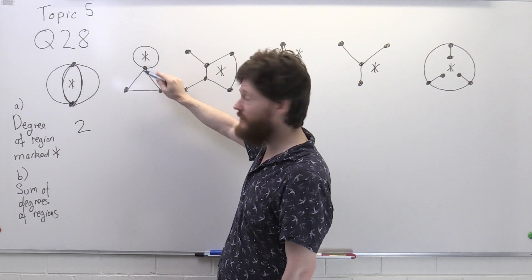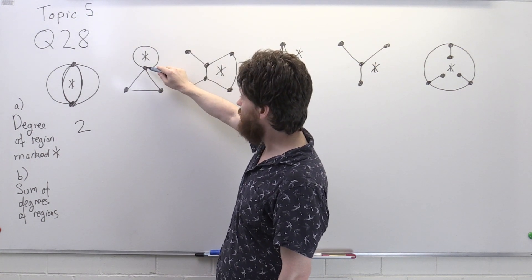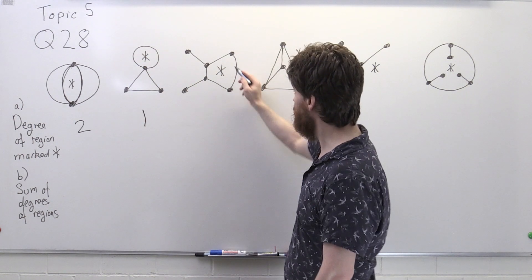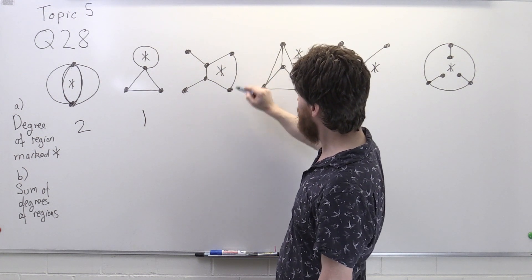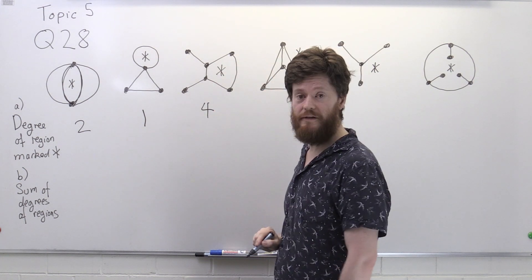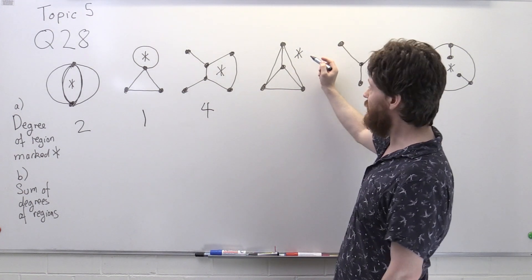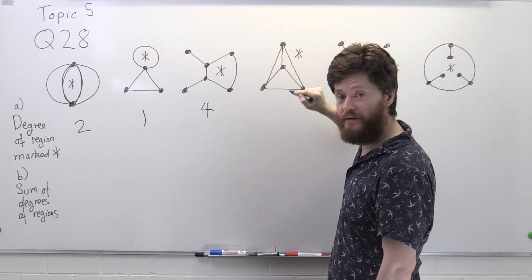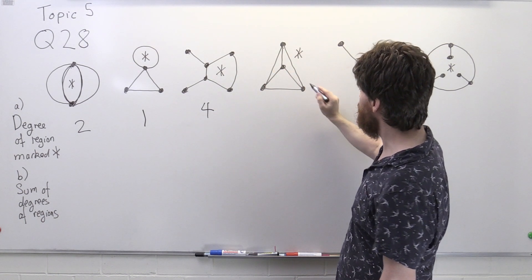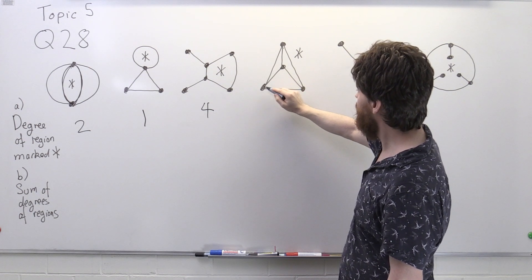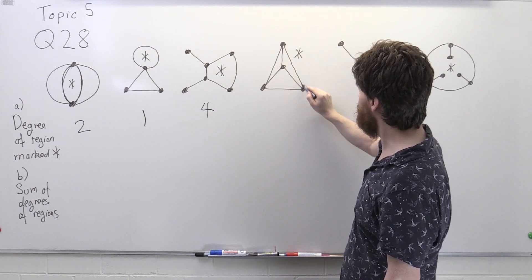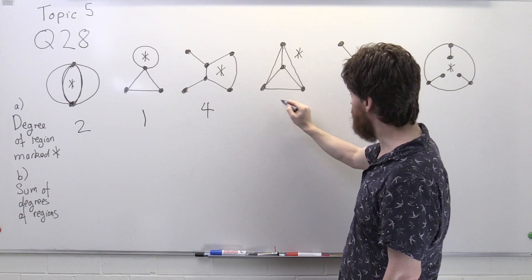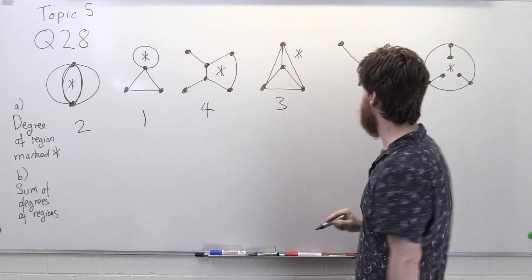Now let's look at this one: we have a region whose boundary is made up of just one edge, so the degree there is one. For this next region we have four edges, so the degree is four. For this region, which is the outside of the graph, the boundary consists of edges on the outside — three edges in total — so the degree there is three.